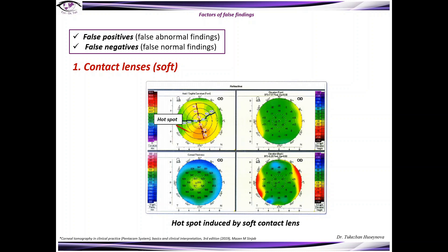That's why the anterior curvature map shows this hot spot in the inferior sector of the cornea. However, elevation maps front and back, as well as pachymetry map, doesn't show any abnormalities.